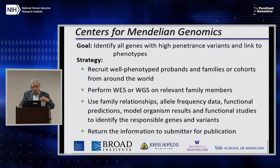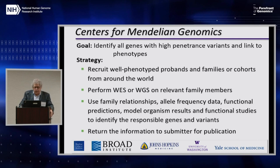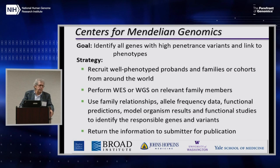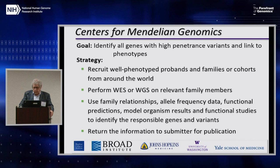In the case of the CMGs, we return the information to the submitter — it's a real partnership between the CMG centers and submitters from anywhere around the world. We urge the submitter to publish results as quickly as possible, and we've developed a good pipeline to post results on the CMG website so one can see that a particular gene has been tagged with a particular variant causing a particular phenotype. The four centers are Broad, Johns Hopkins and Baylor together, the University of Washington, and Yale.